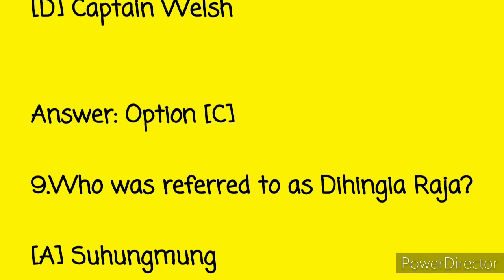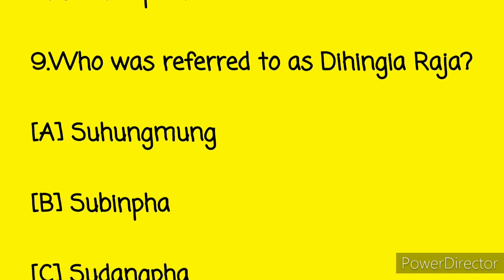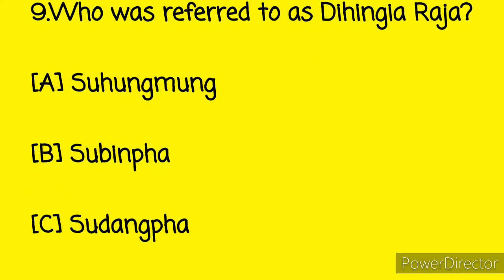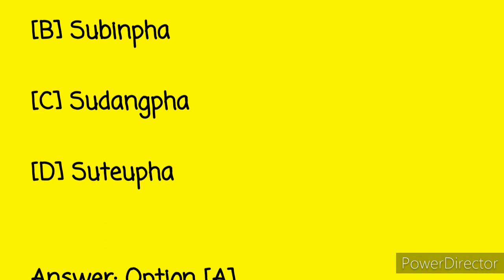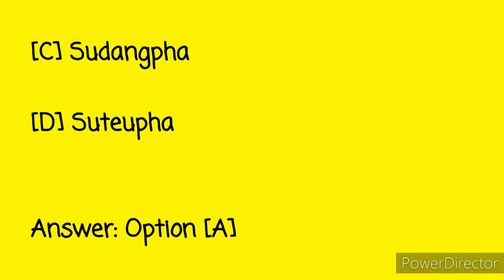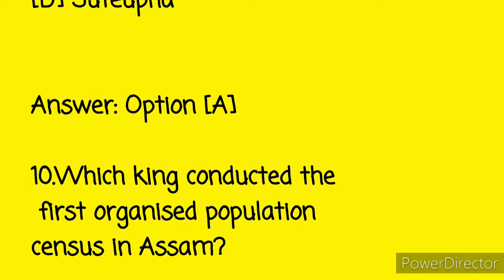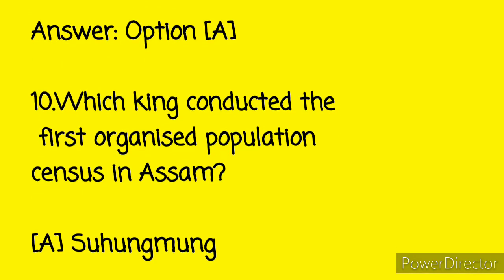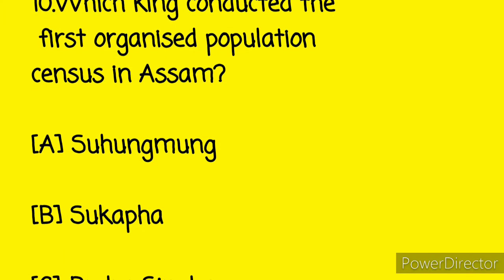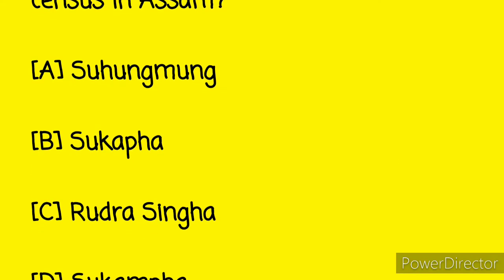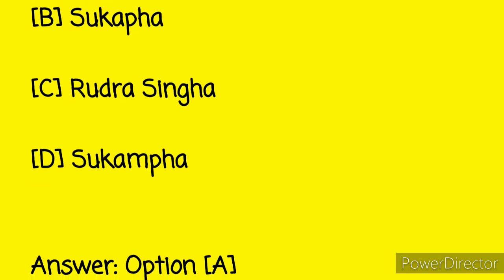Question number nine: who was referred to as the Hingya Rosa? Option A: Suhung Mung, Option B: Subingfa, Option C: Sudangfa, and Option D: Sutewfa. And here the answer is Option A. Question number ten: which king conducted the first organized population census in Assam? Option A: Suhung Mung, Option B: Sukhafa, Option C: Rudasinghe, and Option D: Sukhamfa.